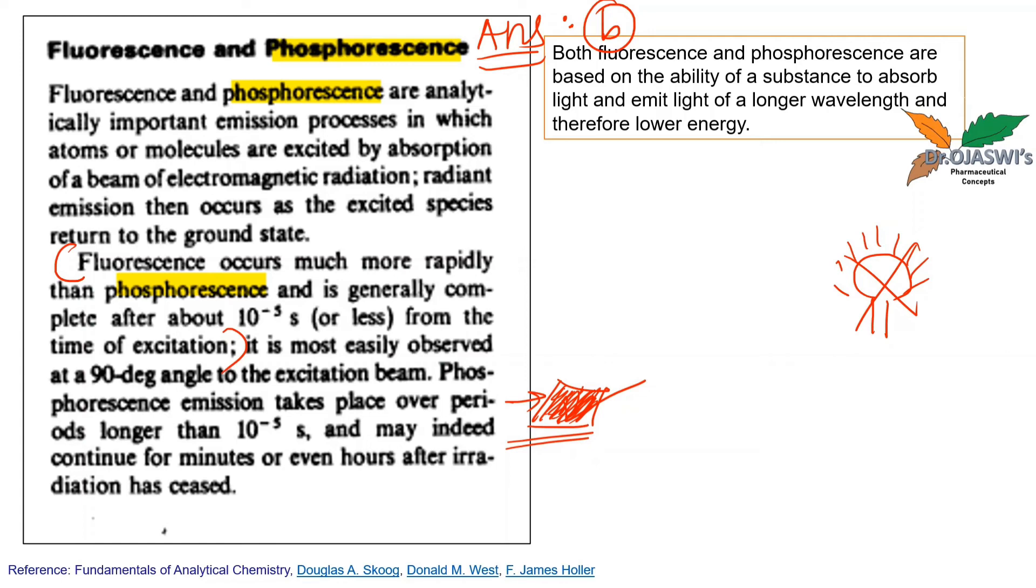If it disappears immediately, it is called fluorescence. But if it lingers for some time, then that is called phosphorescence.